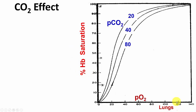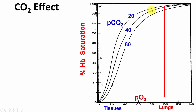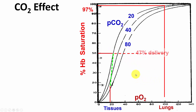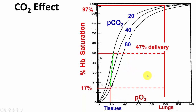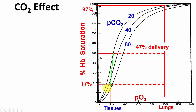Here's hemoglobin saturation versus PO2, showing lungs and tissues with PCO2 pressures of 20, 40, and 80. Normally at high PO2 in the lungs we get almost total saturation at 97%. Out in the tissues at PCO2 of 40, we get about 47% delivery. However, if we shift the PCO2 in the tissues to 80, we get much higher delivery — very little oxygen remains on the hemoglobin, giving about 80% delivery.